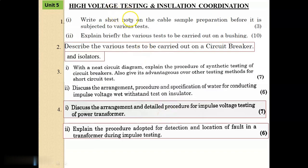Unit 5 is High Voltage Testing and Insulation Coordination. Only 4 questions are considered. My suggestion is to kindly read all these questions, but do not avoid Question No. 2 and 4. Question No. 1: Write a short note on cable sample preparation before it is subjected to various tests. Explain briefly the various tests to be carried out on a bushing. Question No. 2: Describe the various tests to be carried out on a circuit breaker and isolator — reading this will cover minimum 60% of the syllabus and help you answer a wide range of questions. Question No. 3: With a neat circuit diagram, explain the procedure of synthetic testing of a circuit breaker. Also give its advantages over other testing methods for short circuit tests.